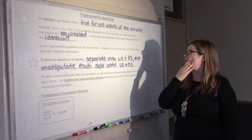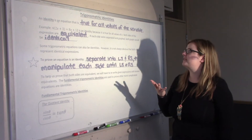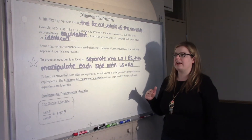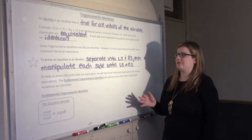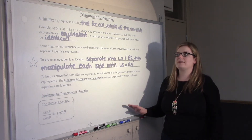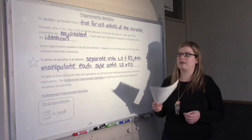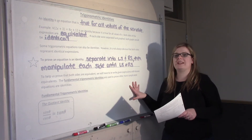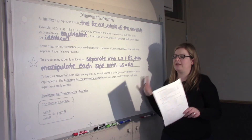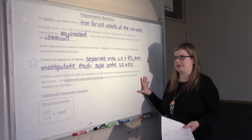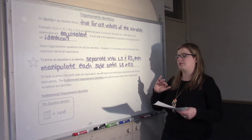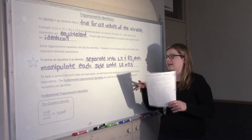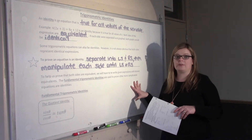Both sides of the expressions are equivalent, and if each side were separated and graphed, they would be identical graphs. In trigonometry, we also have identities, but it's not always obvious like it is with a linear equation where you could just distribute. To prove an equation is an identity, you have to separate the identity into left side and right side. Don't leave the equal sign.